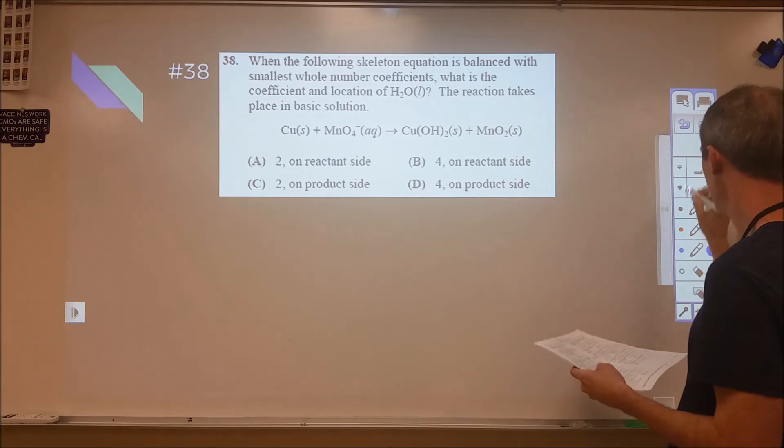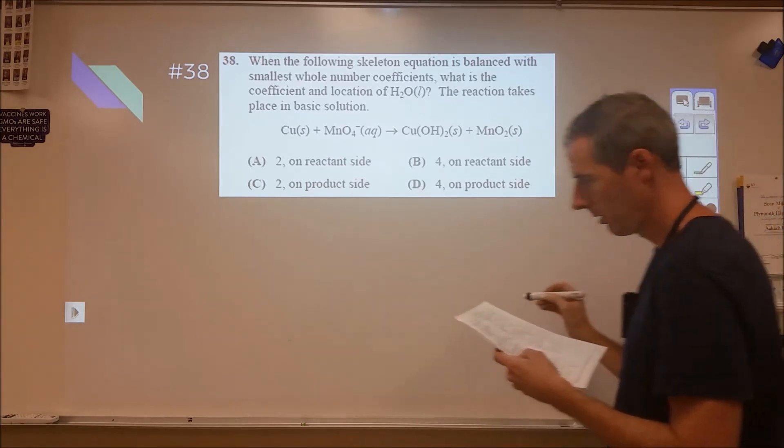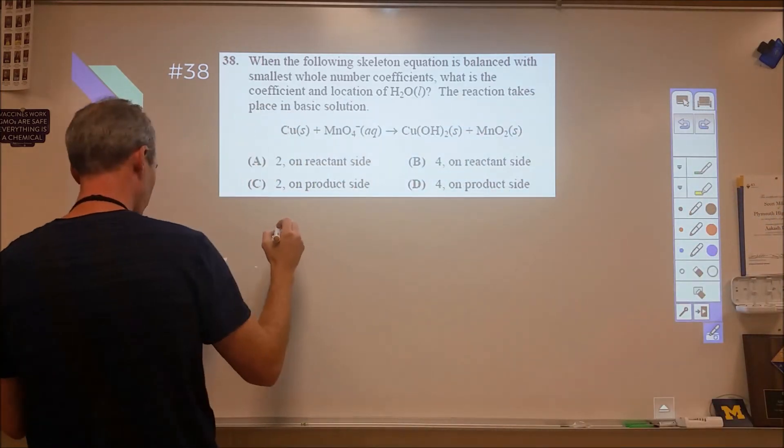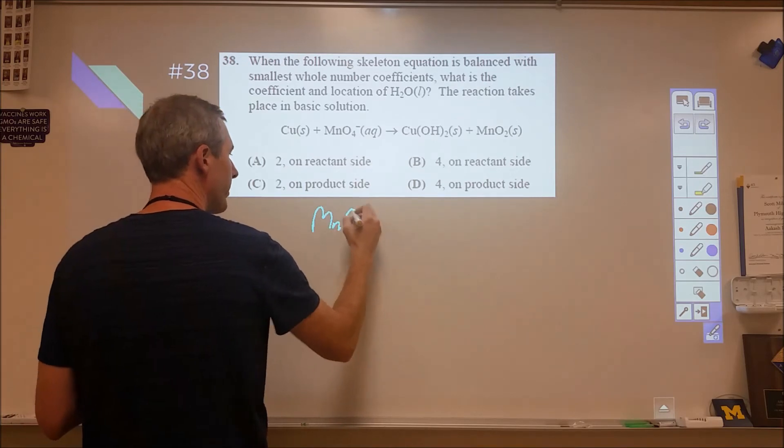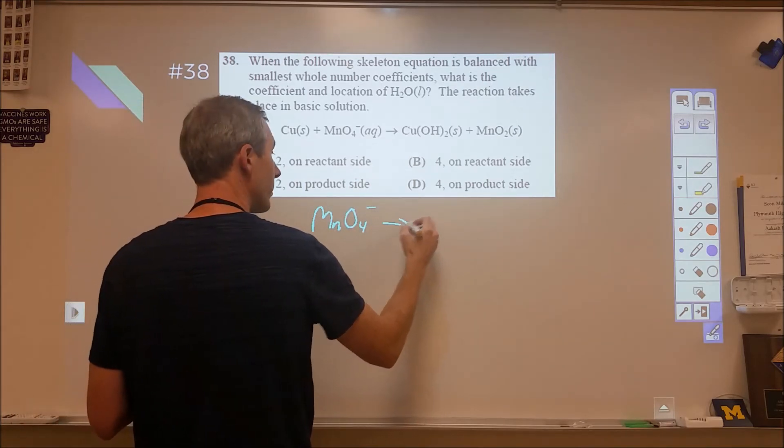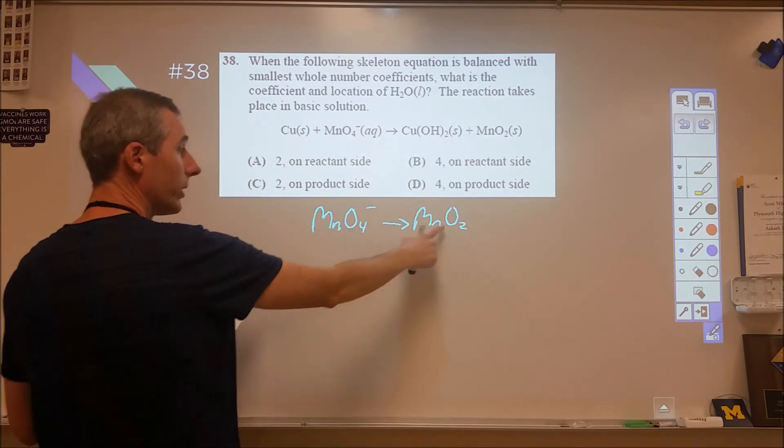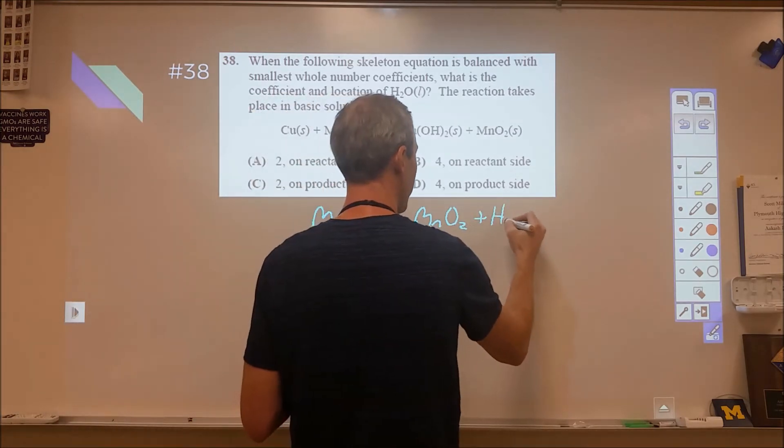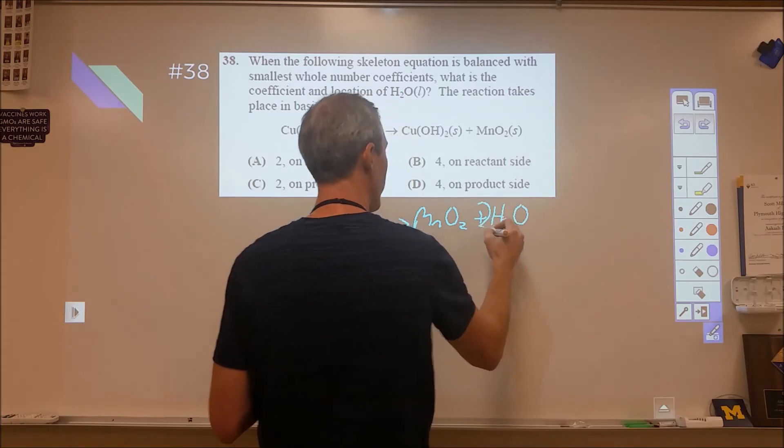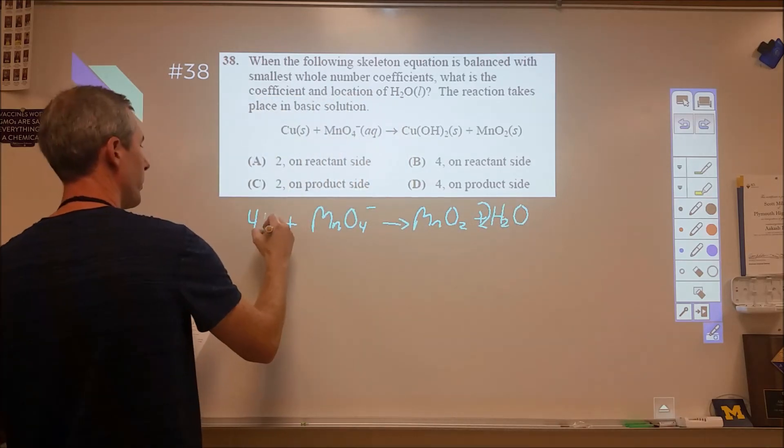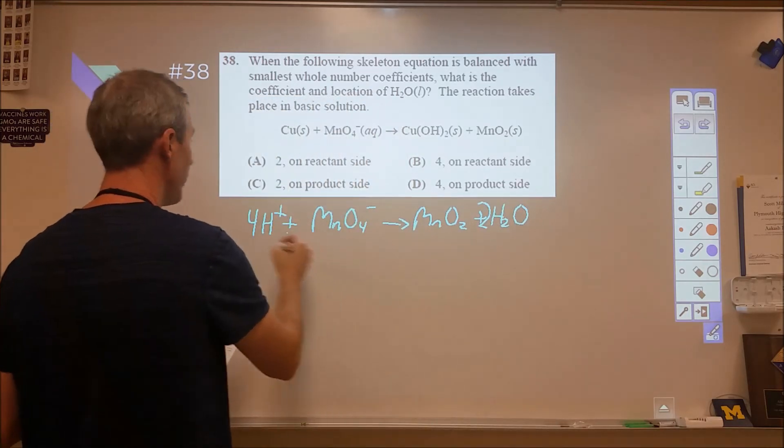Problem 38, we're just doing a balancing of a reaction. Our two half-reactions, we have MnO4 minus comes into MnO2. So, to balance that, we need to balance our waters, and we're in acidic. So, we need two waters, four H pluses, and then we need three electrons.